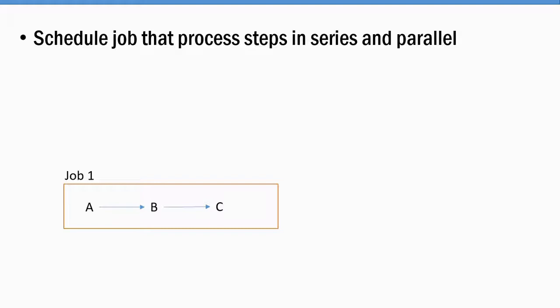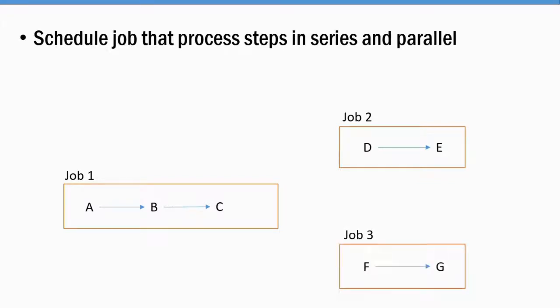So I'll run A, B, and C one after the other. Once those three countries complete, I have four more countries to process, but now I can run them in parallel. Job two will process country D, then once that completes, country E. At the same time I want to process F and G in parallel.